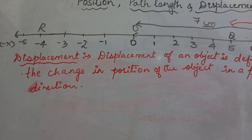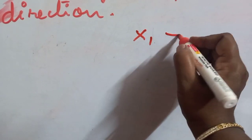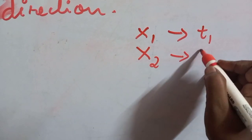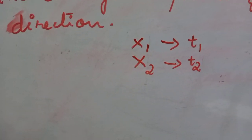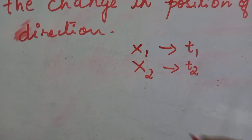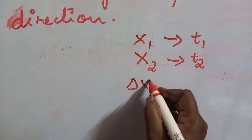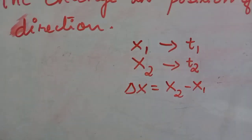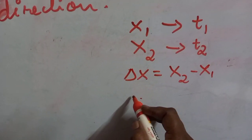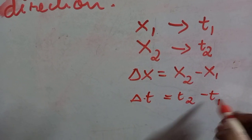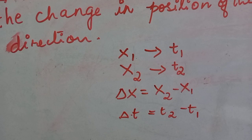If we take x₁ as the position at time t₁ and x₂ as the position at time t₂, then displacement is Δx = x₂ − x₁, in the time interval Δt = t₂ − t₁.